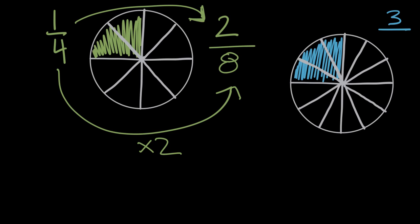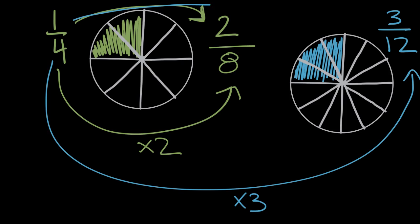So now we have 3 shaded pieces out of a total of 12. And I could have figured that out without even counting because I knew that we tripled. This time we multiplied our original denominator times 3. We tripled. And we also multiplied our numerator times 3.